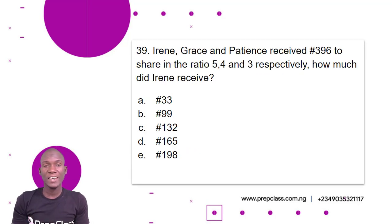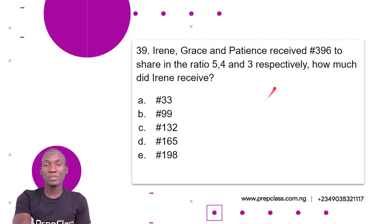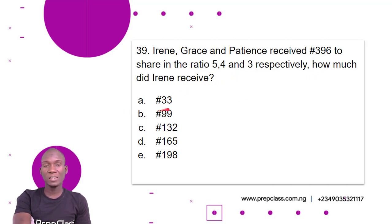Question 39. Irine, Grace and Patience received 396 Naira to share in the ratio 5, 4 and 3 respectively. How much did Irine receive? A. 33 Naira. B. 99 Naira. C. 132 Naira. D. 165 Naira. E. 198 Naira.